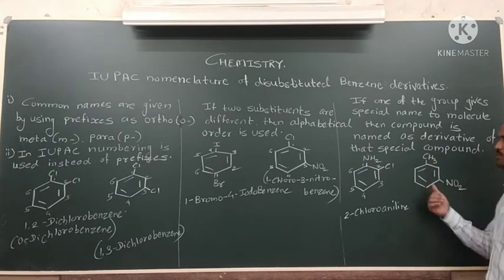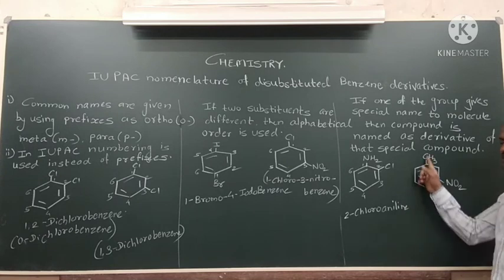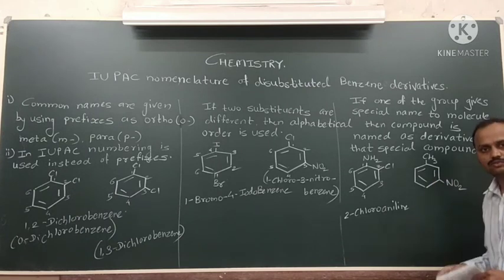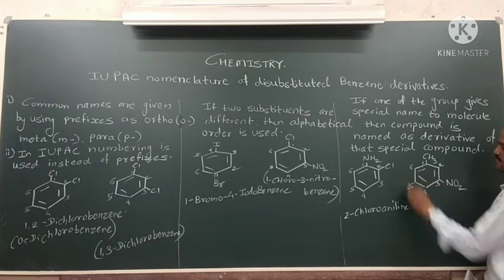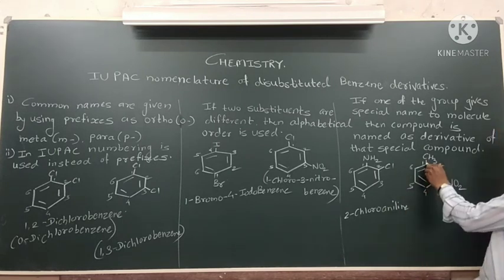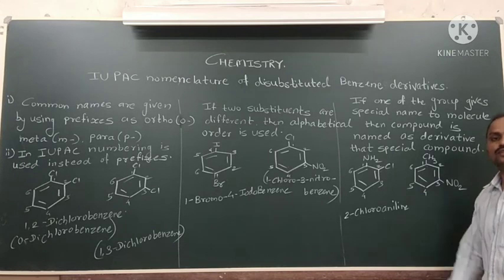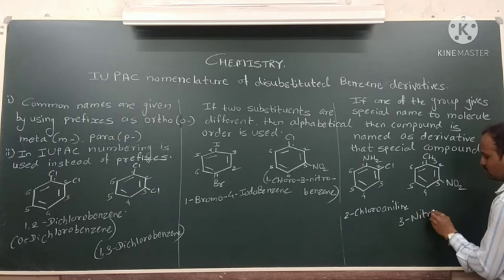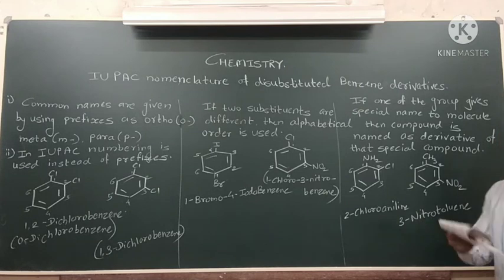Another example: a benzene ring attached to CH₃ is called toluene. A nitro group is also attached. Numbering the ring, the nitro group is on the third carbon relative to the CH₃ group at position one. Therefore, the name of this compound is 3-nitrotoluene.